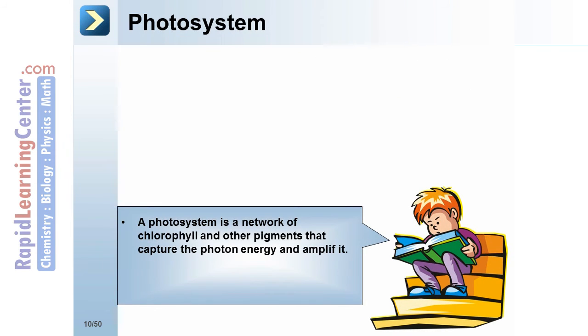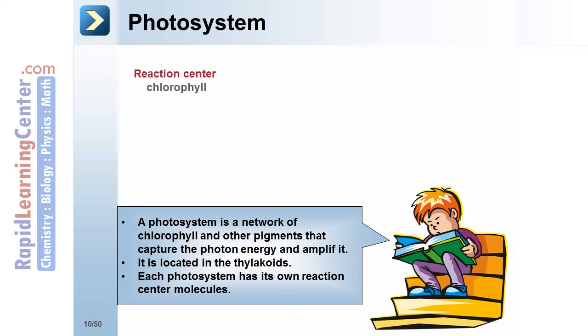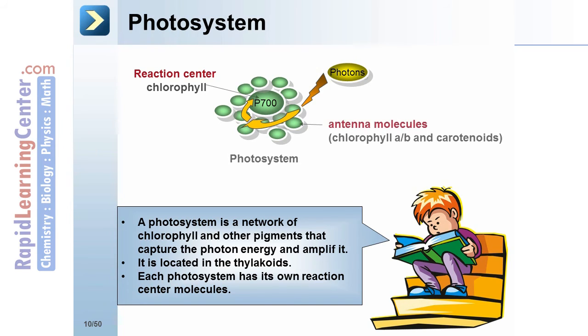Photosystem. A photosystem is a network of chlorophyll and other pigments that capture the photon energy and amplify it. It's located in the thylakoids. Each photosystem has its own reaction center molecules. Reaction center chlorophyll P700. Antenna molecules capture the energy: chlorophyll A, B, and carotenoids.